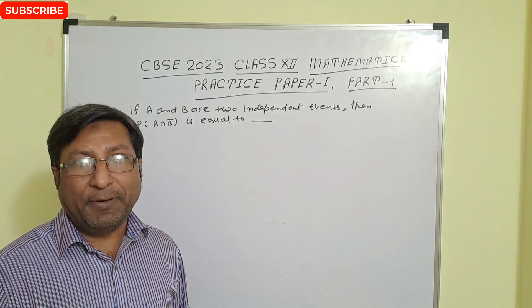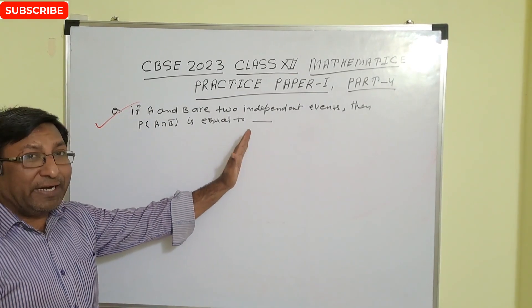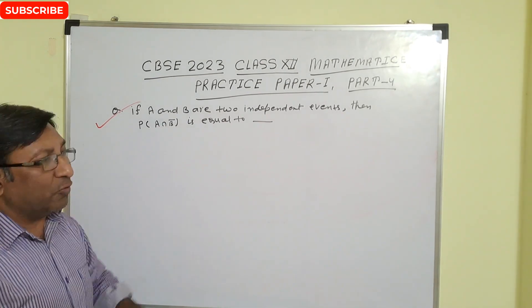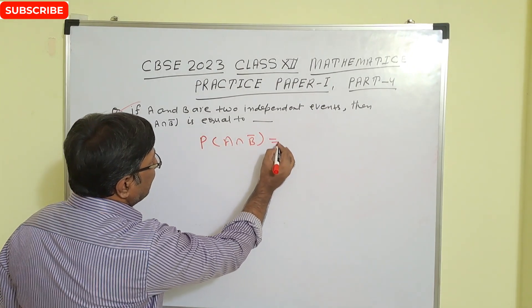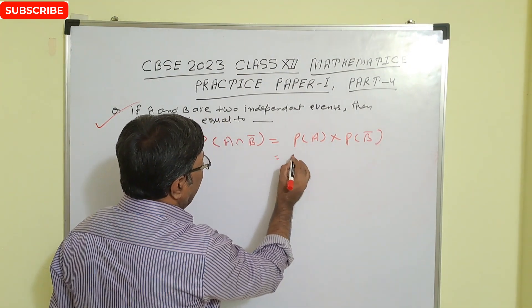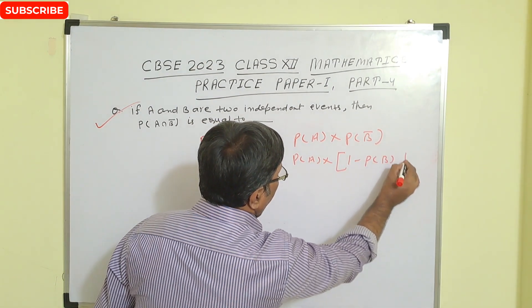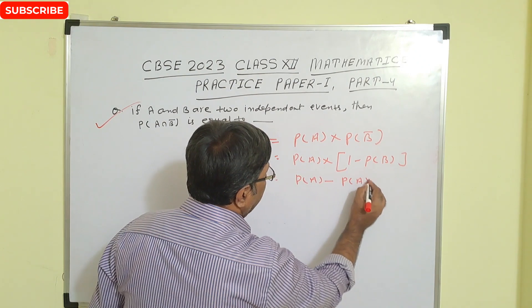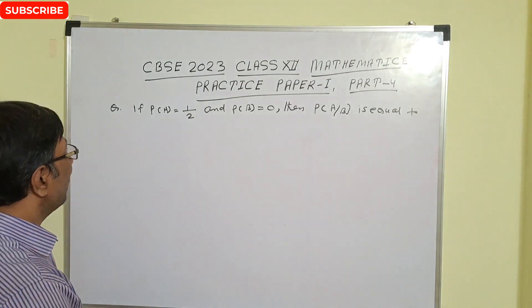The most important question of probability: if A and B are two independent events, then probability of A intersection B' equals probability of A into probability of B', which is probability of A into (1 minus probability of B). So we can write this as probability of A minus probability of A into probability of B. This is the correct answer.